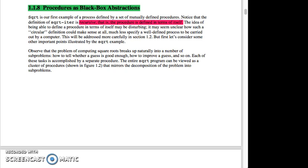1.1.8 Procedures as black box abstractions. Square root is our first example of a process defined by a set of mutually defined procedures. Notice that the definition of square root iter is recursive—that is, the procedure is defined in terms of itself. The idea of being able to define a procedure in terms of itself may be disturbing. It may seem unclear how such a circular definition could make sense at all, much less specify a well-defined process to be carried out by a computer. This will be addressed more carefully in section 1.2. But first, let's consider some other important points illustrated by the square root example.